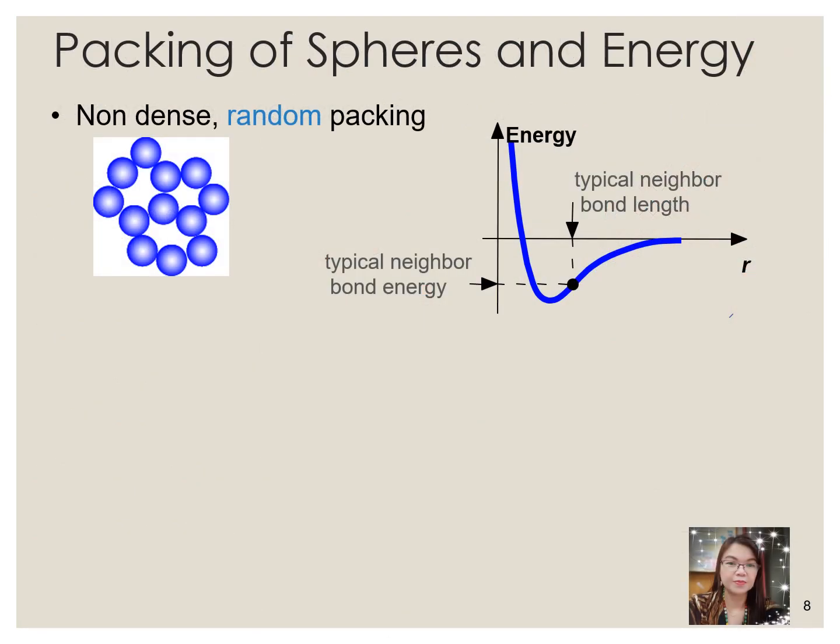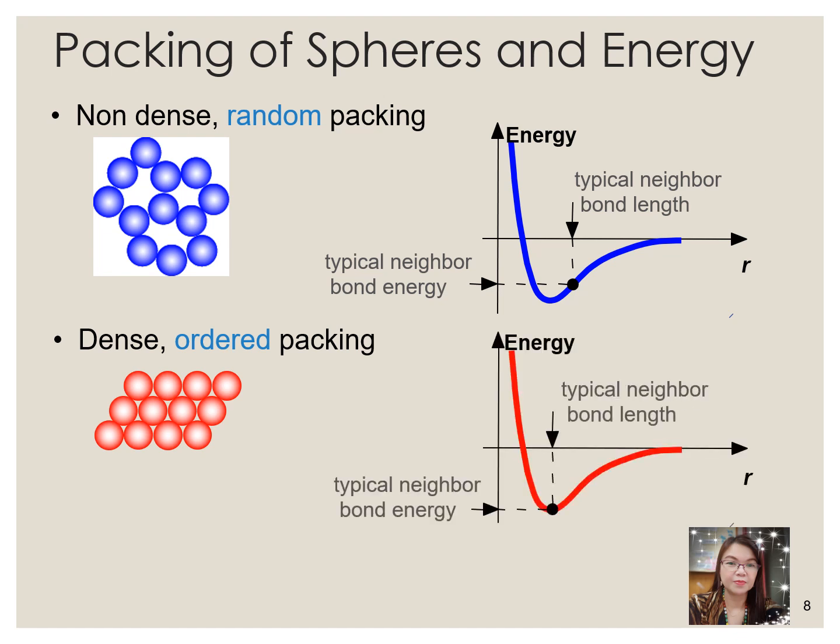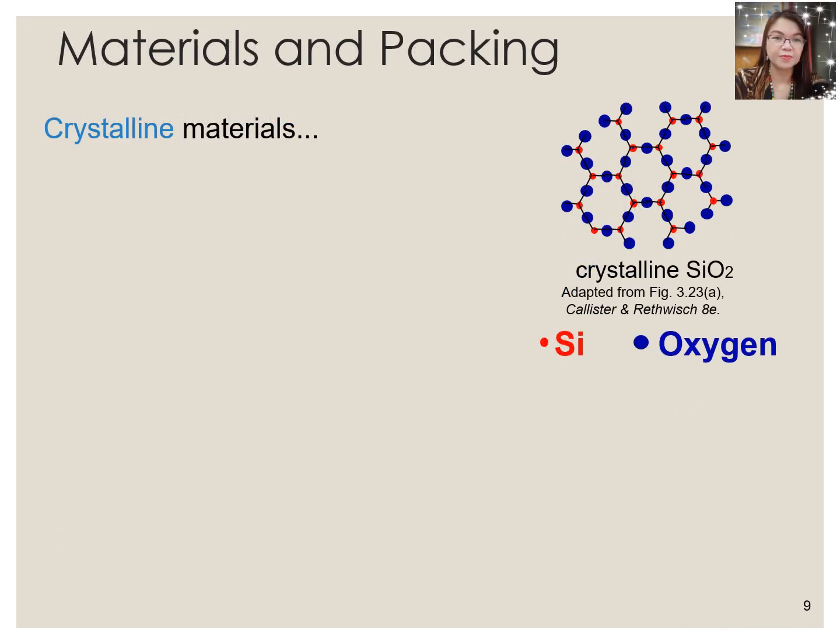For the packing of spheres and energy, this involves the three-dimensional structure of solids, which is considered only substances in which all the components are identical. Such substances can be viewed as consisting of identical spheres packed together in space. The way the components are packed together produces the different unit cells. Most of the substances with structures of these types are metals. Looking at the figure, we have an example of non-dense random packing and dense ordered packing with corresponding energy involved. Dense ordered packed structures tend to have lower energies, mainly because the atoms cannot move because of the limited space supplied to them.